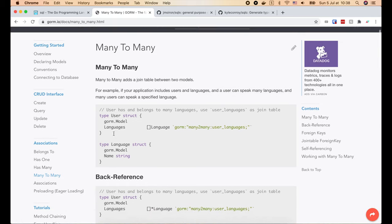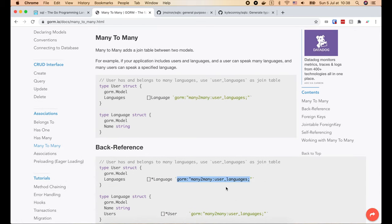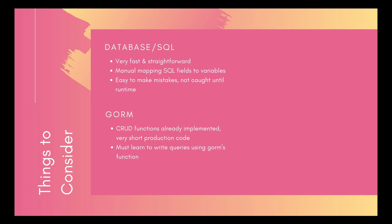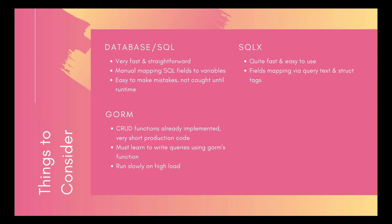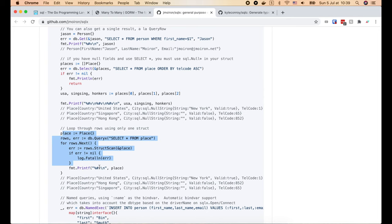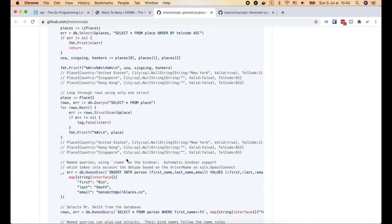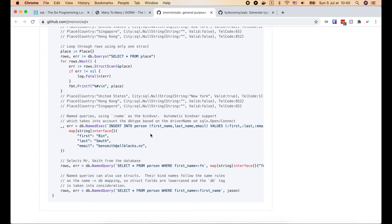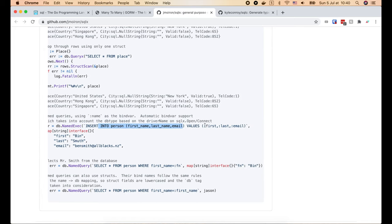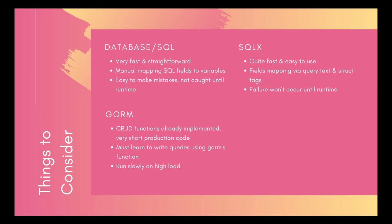I prefer writing the SQL query myself — it's more flexible and I have complete control of what I want the database to do. One major concern with GORM is that it runs very slowly when traffic is high. Benchmarks show GORM can run 3 to 5 times slower than the standard library. Because of this, many people are switching to a middle-way approach using the SQLx library. It runs nearly as fast as the standard library and is very easy to use. Fields mapping are done via query tags or struct tags, and it provides functions like select or struct scan that automatically scan results into struct fields, helping shorten code and reduce mistakes. However, any errors in the query will only be caught at runtime.